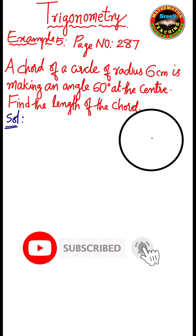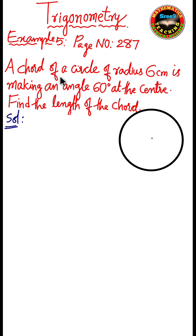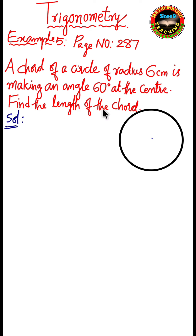Now let us see the question. A chord of a circle of radius 6 centimeters is making an angle of 60 degrees at the center. We are asked to find the length of the chord. So here a circle is given whose radius is 6 centimeters, and there is a chord making an angle of 60 degrees at the center.